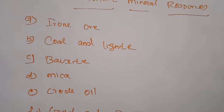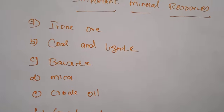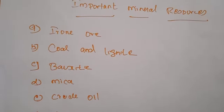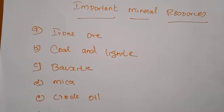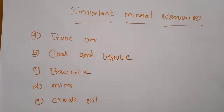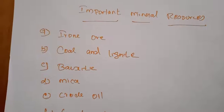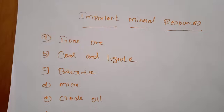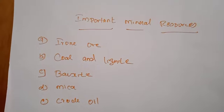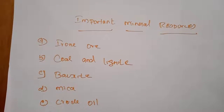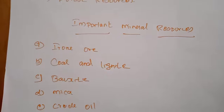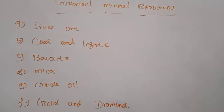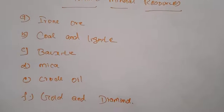Bauxite is the main source of metal like aluminum, and major resources are concentrated in the East Coast bauxite belt. India possesses only a limited gold resource. The Kolar Gold Field in Kolar district, and the Ramgiri Gold Field in Andhra Pradesh, are among the known places for deriving gold.